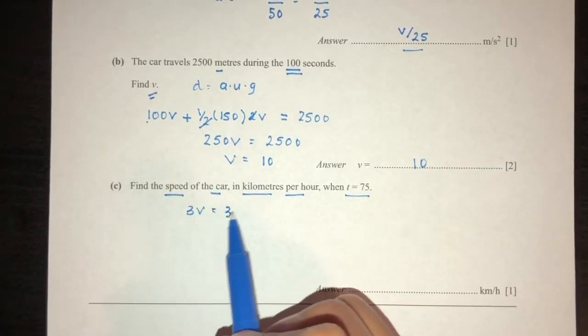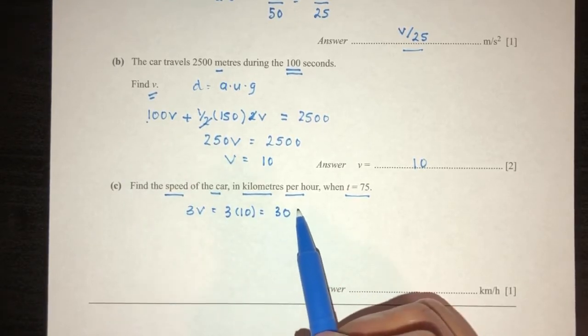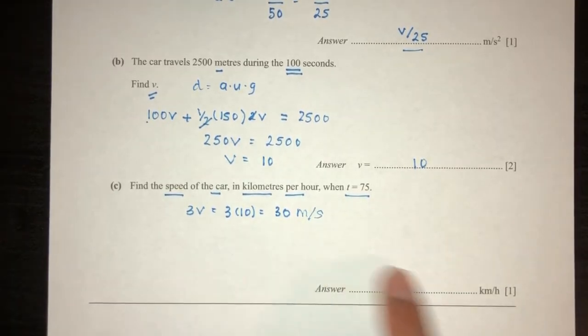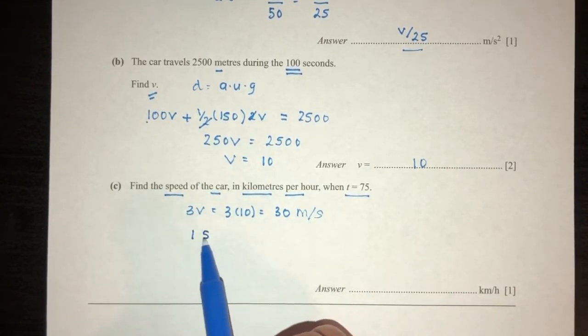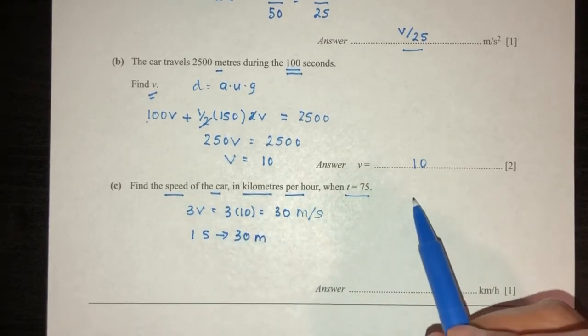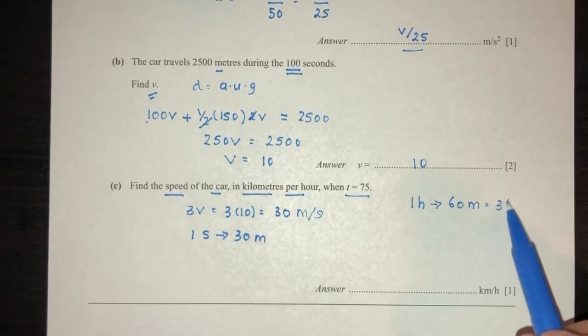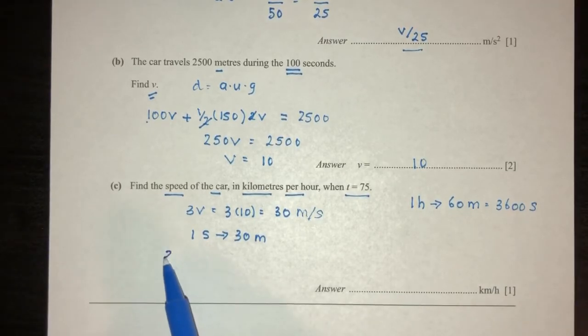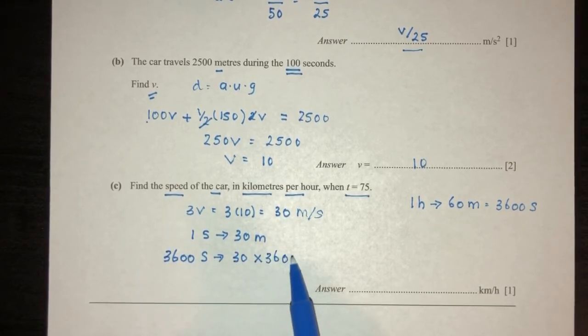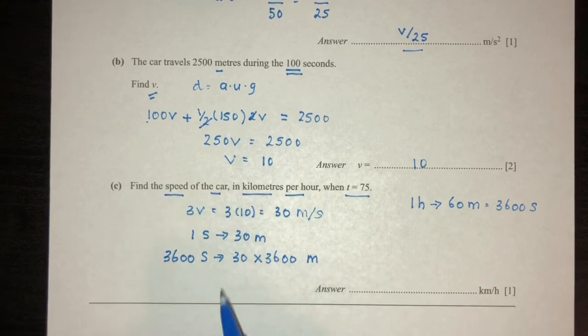So 3 times V is 10. That will be 30 meters per second. So we have to convert this to km per hour. So in this case there's always a shortcut to doing this, but I like to use simple steps and using logic. For example, this means in 1 second you travel 30 meters. Now in 1 hour you have 60 minutes and in 60 minutes you have 3600 seconds. So how much would you travel in 3600 seconds? You would do 30 times 3600. Now this is meters of course. We have to convert that to km. So we have to divide by 1000.